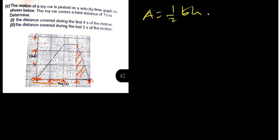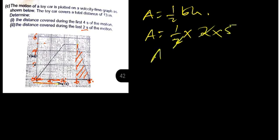We want to find the area under that curve. The base B is eight minus six, which is two — as stated in the question, the last two seconds. So our area = half × 2 × 5. The two and two cancel, so we get five meters. Therefore, the distance in the last two seconds is five meters.